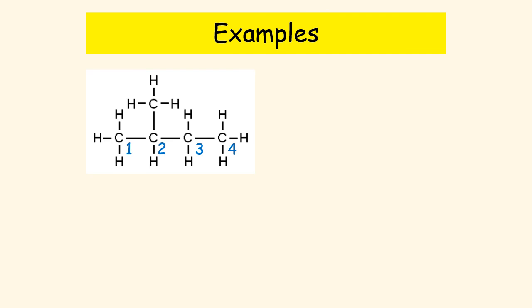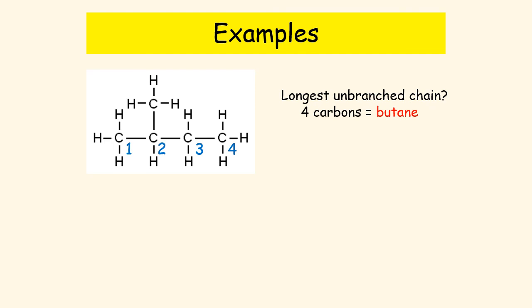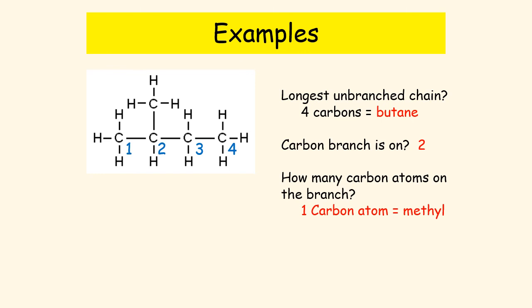Here's an example. The longest chain has four carbons — one, two, three, four. There is one branch found on carbon number two, and the branch contains one carbon. So the longest chain is four carbons — that's butane. The branch is on carbon number two, and there's only one carbon atom in the branch so it's methyl. Putting it all together: 2-methylbutane.